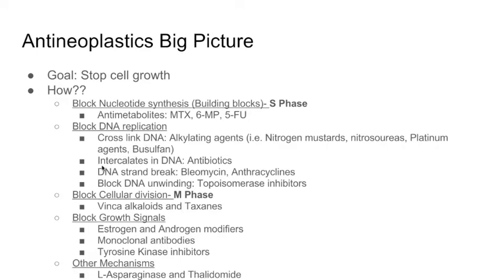You can also have drugs that intercalate into the DNA — these are the antibiotics. You can make breaks in the DNA using bleomycin and anthracyclines. And finally, you can block DNA unwinding. As DNA replicates, it forms supercoils causing tension on the strand, which is relieved by topoisomerase. If you inhibit topoisomerase, you block DNA unwinding and eventually cause DNA breaks. That's the second big category.